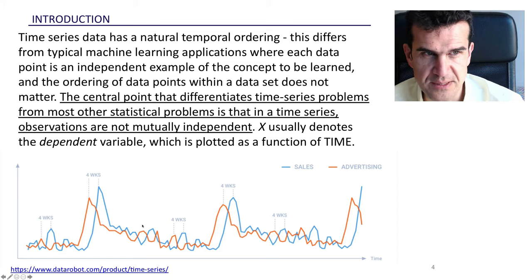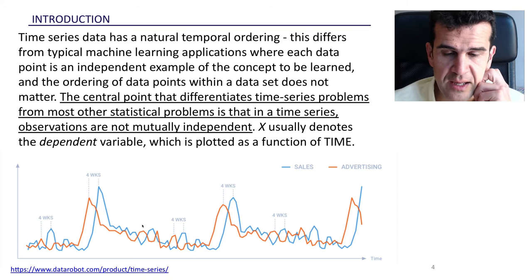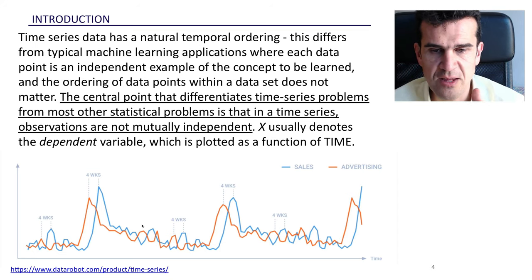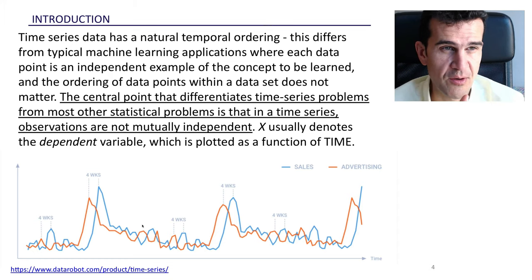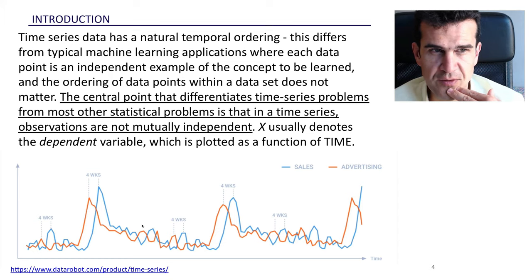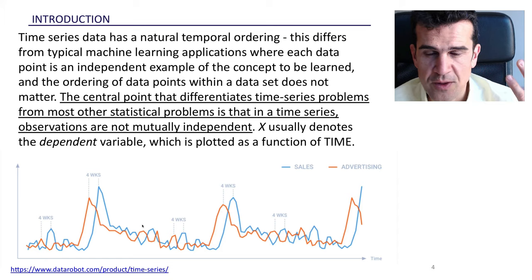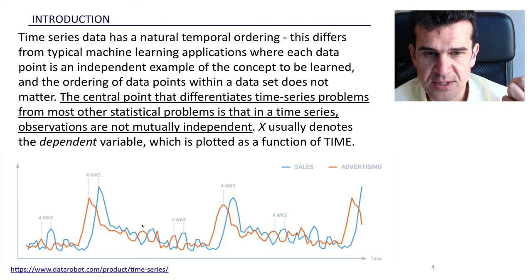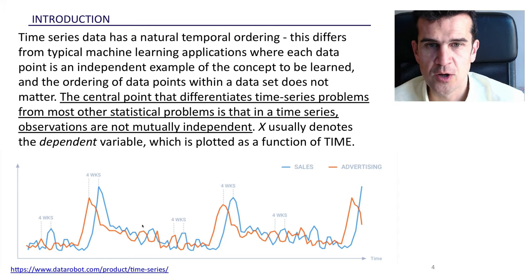The key difference between time series and the datasets we've used so far in machine learning is that here the order really matters. If you change the order of the data points, the information captured changes completely. In previous units, the order of data points didn't matter — we would have gotten exactly the same results. What distinguishes time series is that they have a natural temporal ordering.